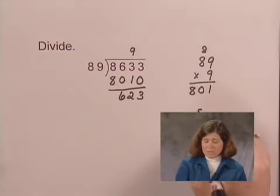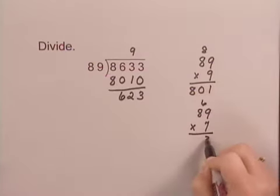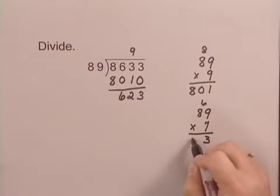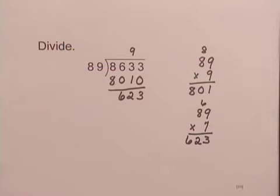To check that, we need to multiply 89 times 7. And we get that 89 times 7 is 623. It turns out that 89 times 7 is exactly 623.